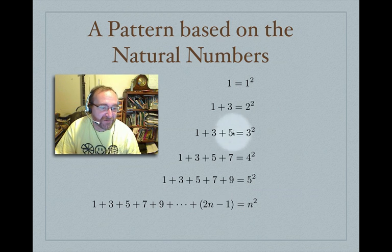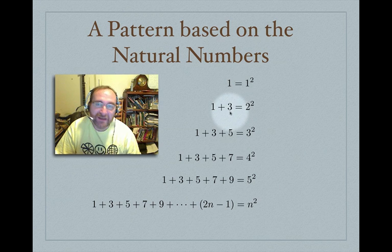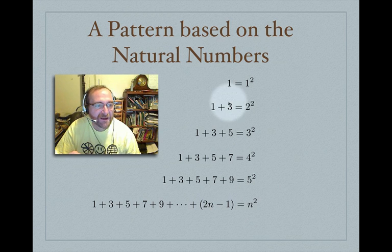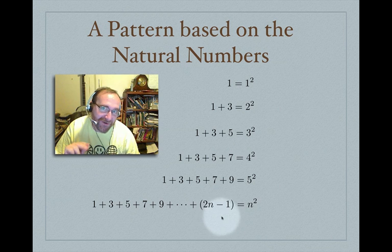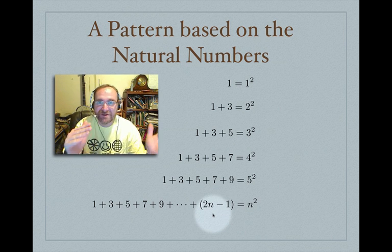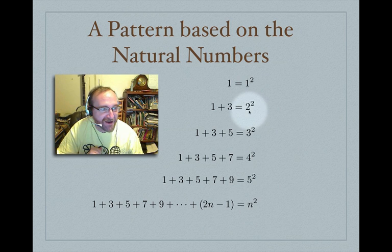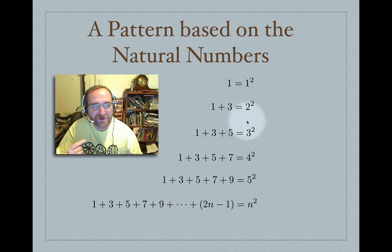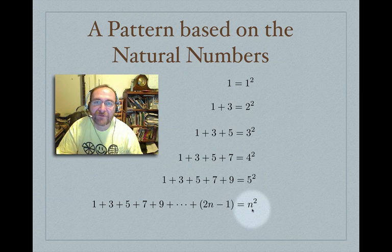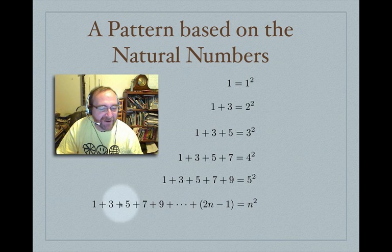The formula works from the very beginning: 2 times 1 minus 1 is 1, and the second odd number is 2 times 2 minus 1, which is 3. This formula generates the next term in the series. The pattern itself is described as: if you have n odd numbers, the sum equals n squared. Once I have an abstract way of expressing the pattern, I can use mathematics to prove it.